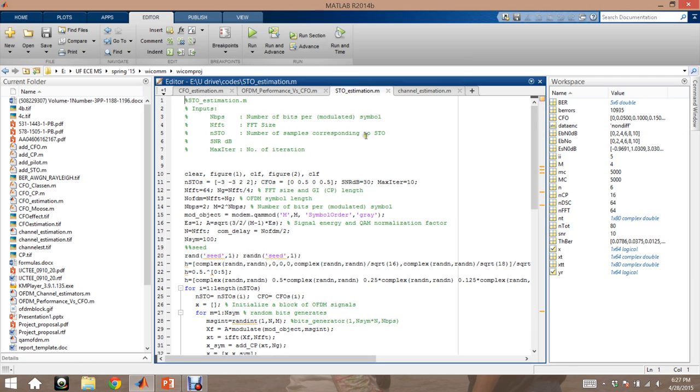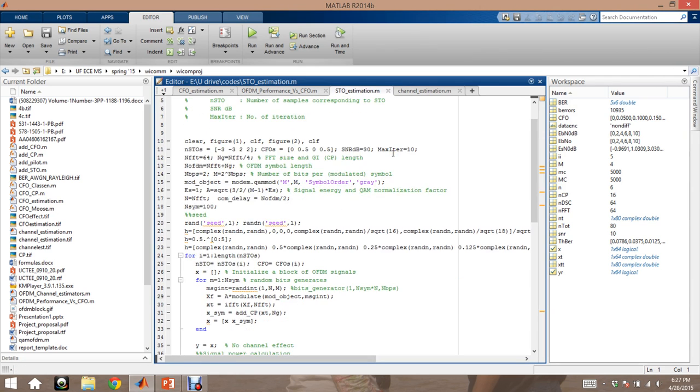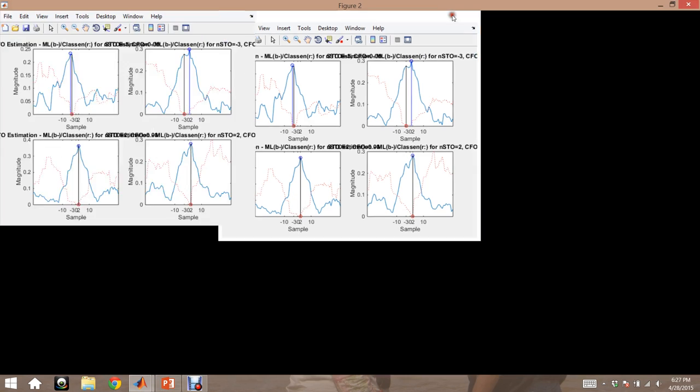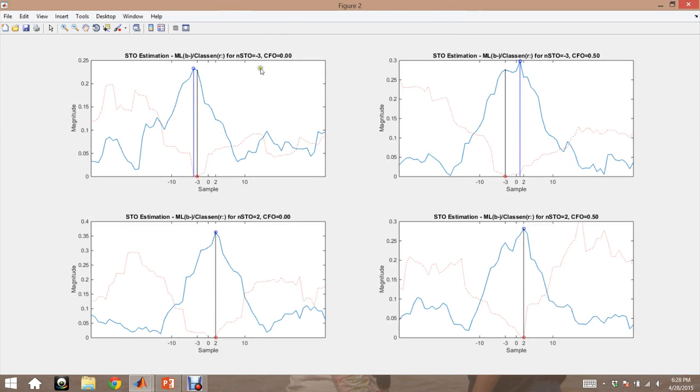Moving on to the OFDM performance when it has the CFO. This shows that for a 64-point FFT, the channel has a lot of errors when the CFO is there. The red line is the ideal BER of an AWGN channel of an OFDM symbol, and the other lines are the variation of the CFO. As we increase the CFO, the BER performance goes drastically bad.